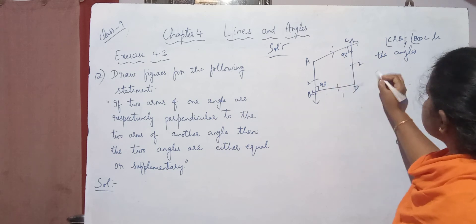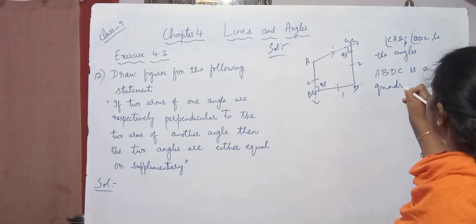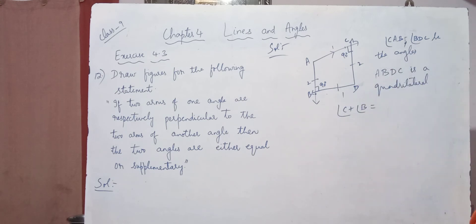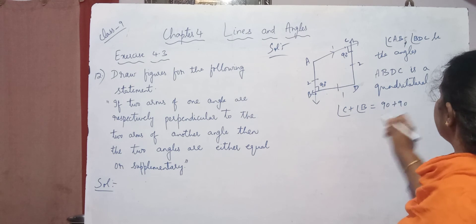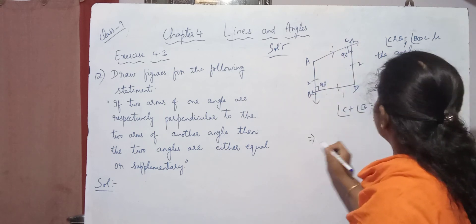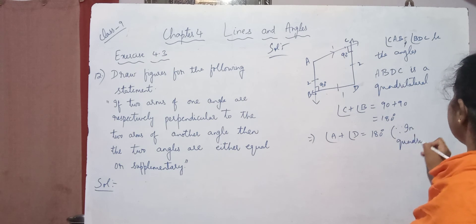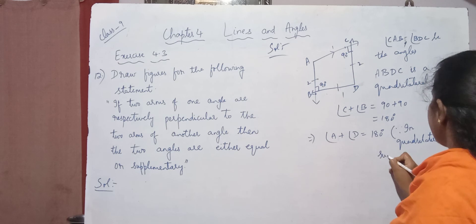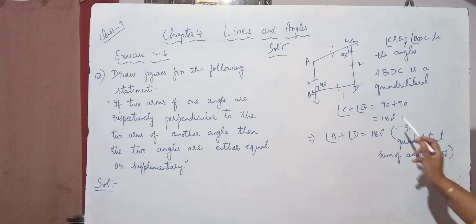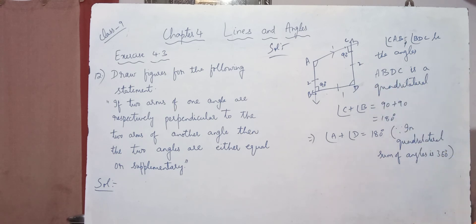Now, what you can see is that A, B, D, C form a quadrilateral. Now, angle C plus angle B equals 90 plus 90, that is 180 degrees. But in a quadrilateral, the sum of all angles is 360 degrees. So this implies angle A plus angle D equals 180 degrees. Why? Since in a quadrilateral the sum of all angles is 360 degrees — already 180 is accounted for by angles C and B, so from 360 removing 180 we get 180. So the sum of the remaining two angles is 180.